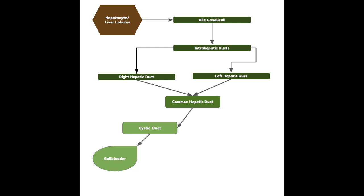Once bile makes it to the gallbladder, it hangs out there for a while. The epithelial folds on the lining start absorbing water back, concentrating the bile so it is better prepared to emulsify fats. To get to the duodenum, it must travel through a few more ducts — let's look at how bile moves from the gallbladder to the duodenum.